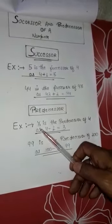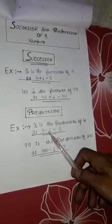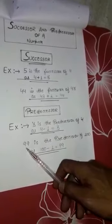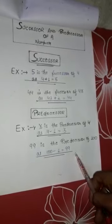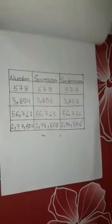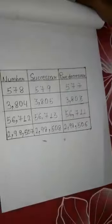Now, 3 is the predecessor of 4, as 4 minus 1 equals 3. And 99 is the predecessor of 100. That is, 100 minus 1 equals 99. Now, you see the chart. By this chart, you can understand very correctly.